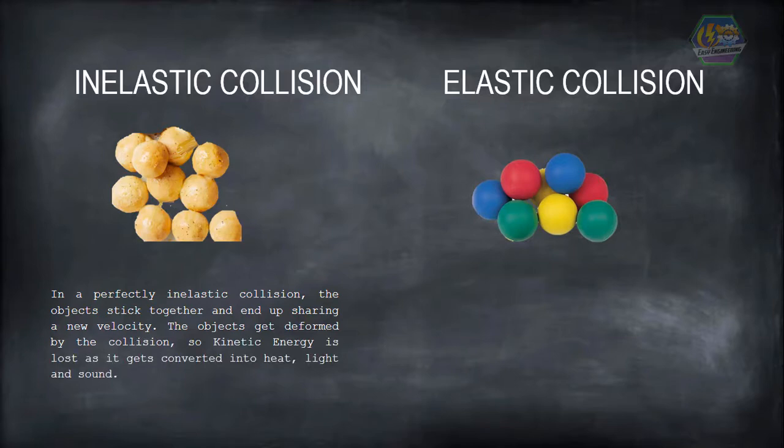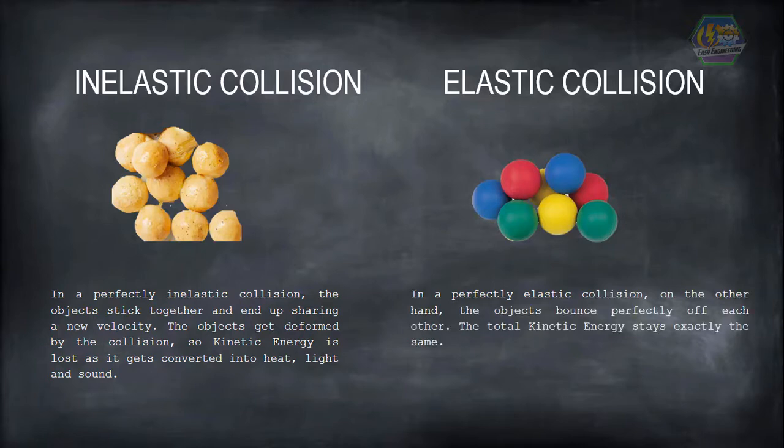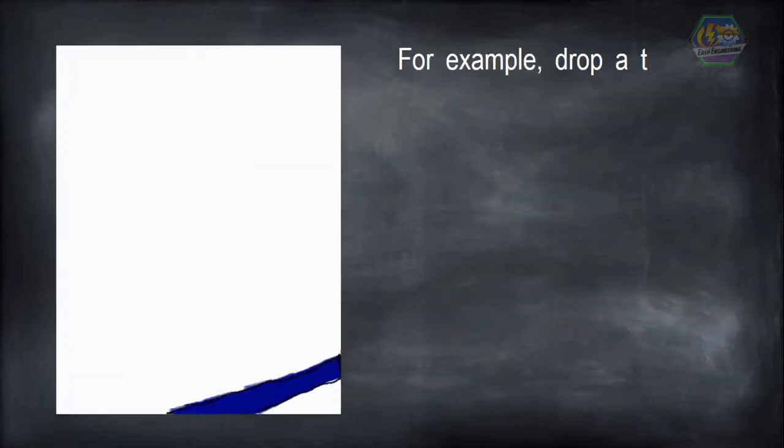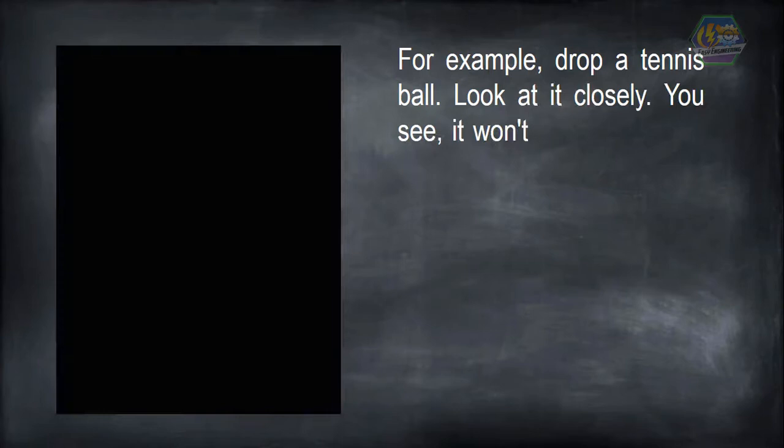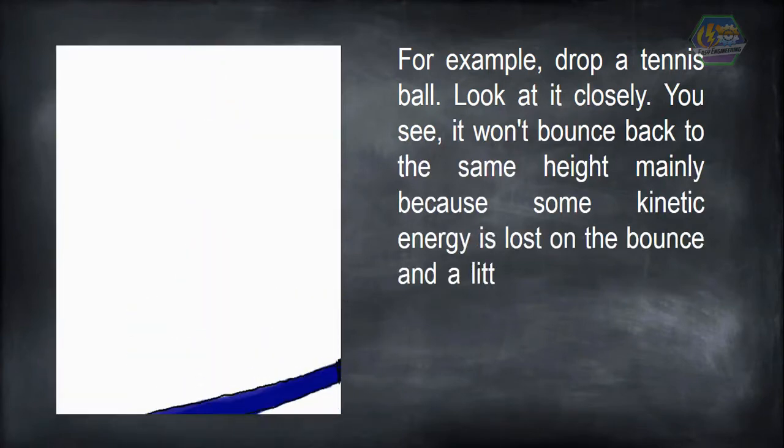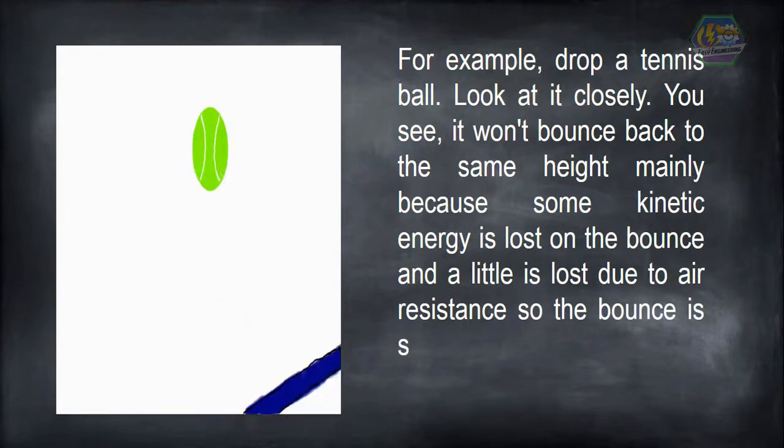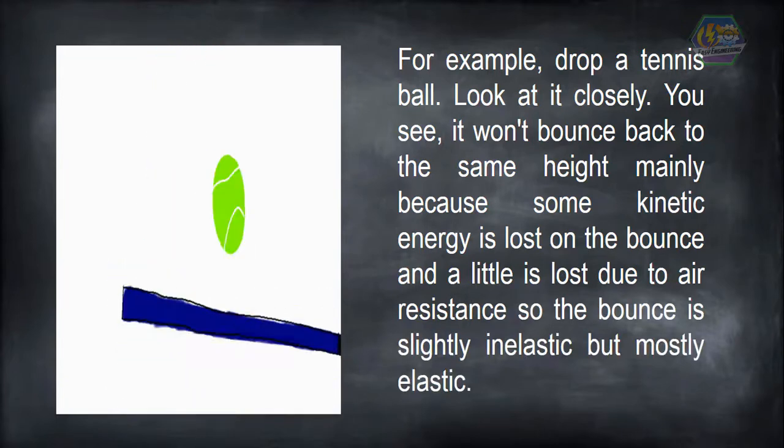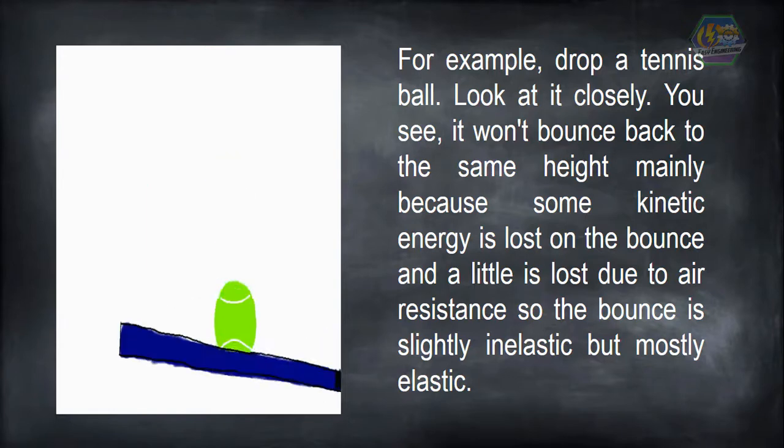In a perfectly elastic collision, on the other hand, the objects bounce perfectly off each other. The total kinetic energy stays exactly the same. For example, drop a tennis ball. Look at it closely—you see it won't bounce back to the same height, mainly because some kinetic energy is lost on the bounce and a little is lost due to air resistance. So the bounce is slightly inelastic but mostly elastic.